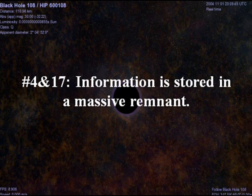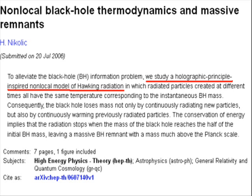Alternative 4, which is actually the same as alternative number 17, is that information is stored in a massive remnant that appears once the black hole stops shrinking, and then all remaining information is stored in that remnant. This was thought of by a Croatian scientist named Hrafe Nikolic. Let's see what he has to say describing his own model: 'To alleviate the black hole information problem, we study a holographic principle-inspired non-local model of Hawking radiation.' This is not actually an alternative to the holographic principle at all — it is inspired by the holographic principle.